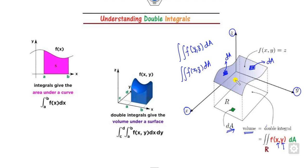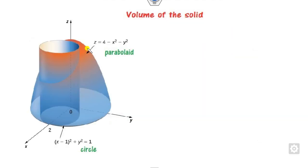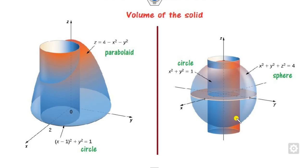Using this understanding of the double integral, we can look at certain examples. The first involves a paraboloid as the outer surface with a cylinder whose base is a circle with center (1, 0, 0). Another example uses a sphere and a cylinder where the base is a circle. We will cover how to find the volume of such solids in a simple manner.